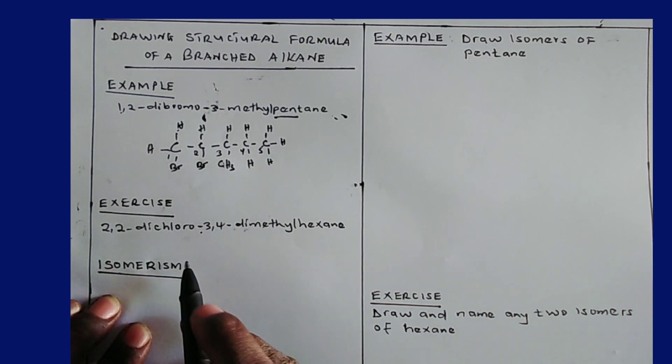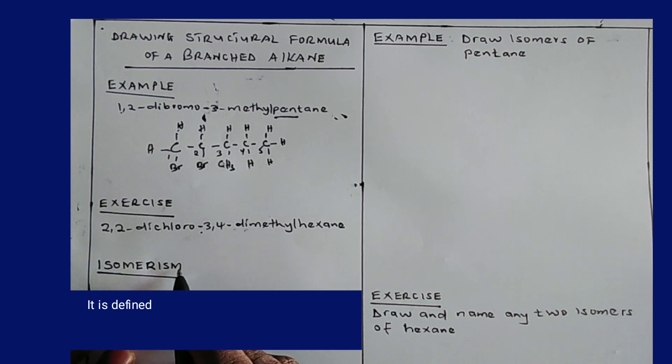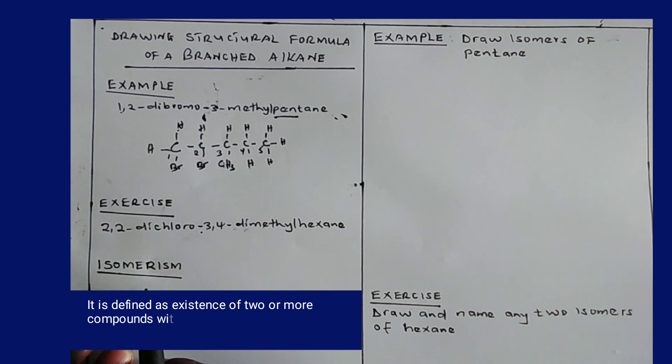Now the next subtopic which is isomerism, you first of all look at the definition of isomerism. Isomerism is defined as existence of two or more compounds with the same molecular formula but different structural formula.